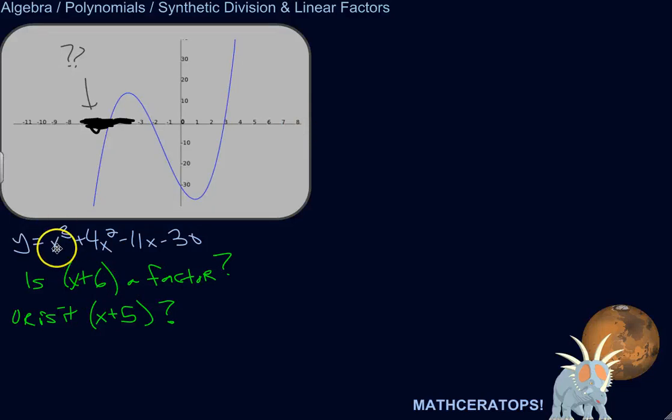Suppose you have a polynomial. We've got this polynomial function, y equals x cubed plus 4x squared minus 11x minus 30.